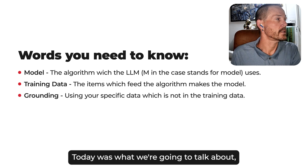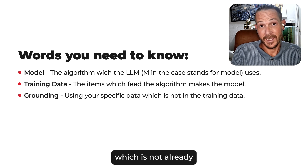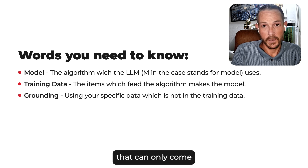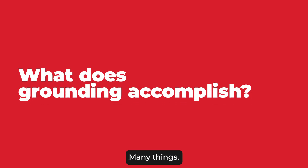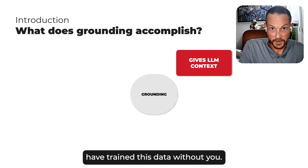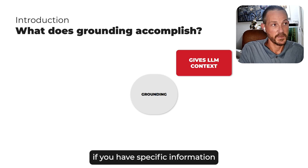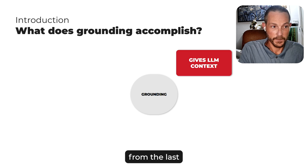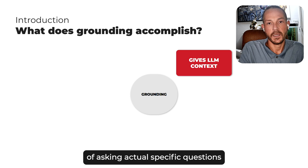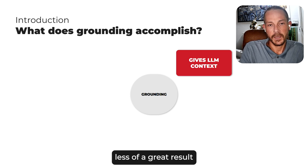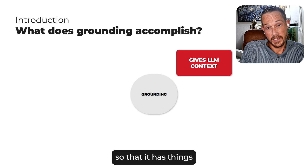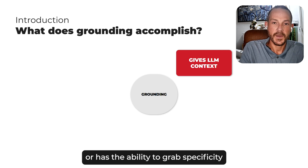Then you have grounding, which is what we're going to talk about today — using your specific data, which is not already in the training data, giving it a layer of specificity and subject matter expertise that can only come from adding your own specific data. One of the most important things grounding accomplishes is it gives the model context it wouldn't otherwise have. If you have specific information about your clients or product that wasn't readily available on the internet in the last seven to ten years, it's not going to be in the contextual database. Grounding lets you give it more context so that it has specificity where it didn't before.